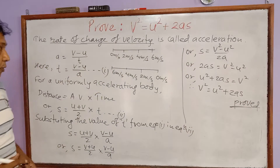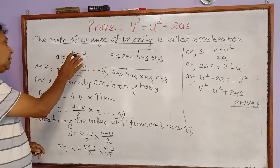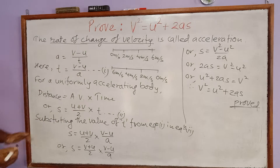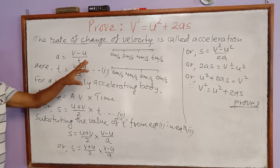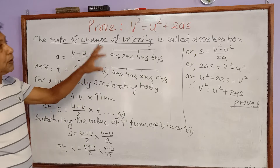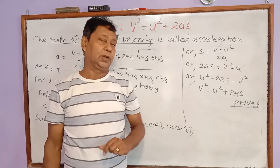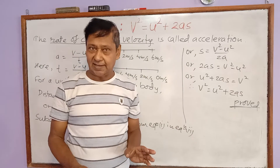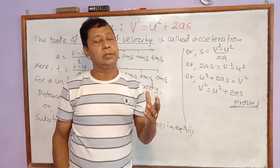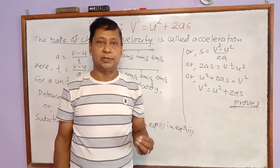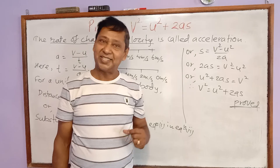This equation is proved with the help of the definition of acceleration and the concept of distance covered by a body in uniform acceleration. This is how we prove v squared equals u squared plus 2as. This equation is important and is used in solving numerical problems related to uniformly accelerated bodies.